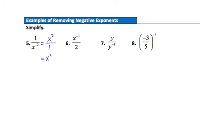Example 6: the negative exponent is in the numerator, so bring that factor down to the denominator. When it's removed from the numerator, a 1 is left. Moving it to the denominator gives 1 over 2x to the positive third power.